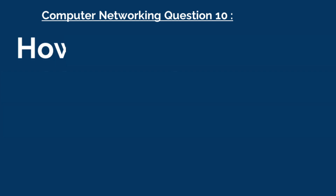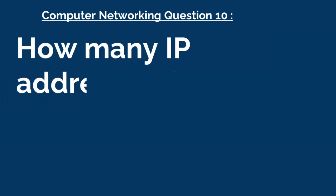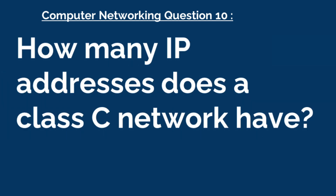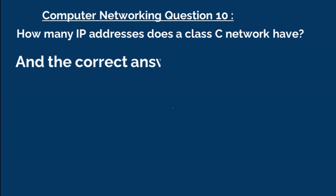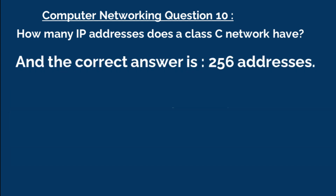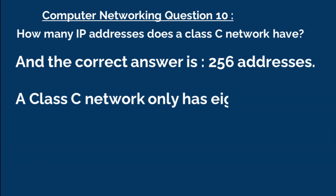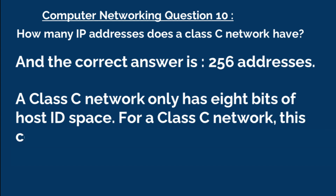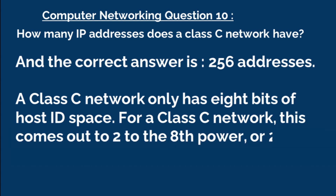Question 10: How many IP addresses does a class C network have? The correct answer is 256 addresses. A class C network only has 8 bits of host ID space. For a class C network, this comes out to 2 to the 8th power, or 256 addresses.